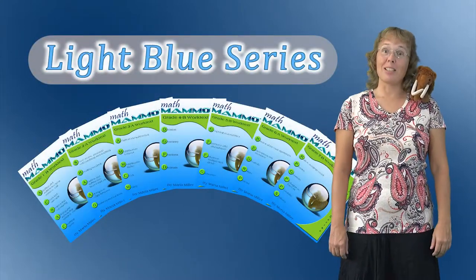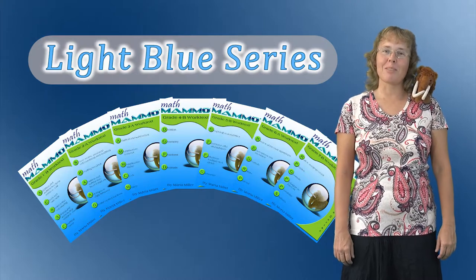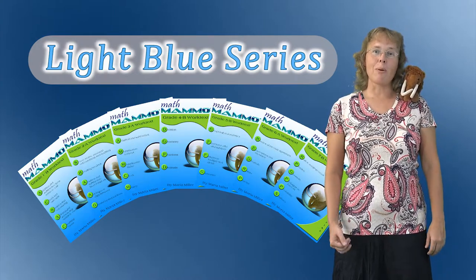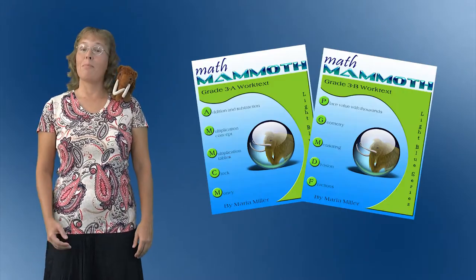Math Mammoth Light Blue series is a complete curriculum, which means it covers all the necessary topics for a given grade. For each grade level, there are two student books, A and B.